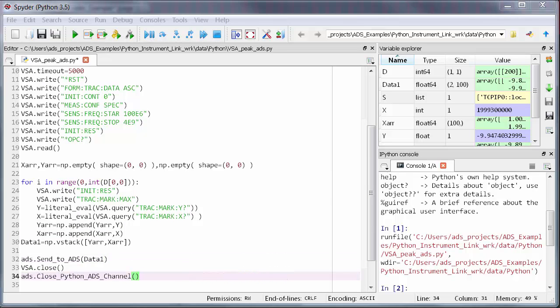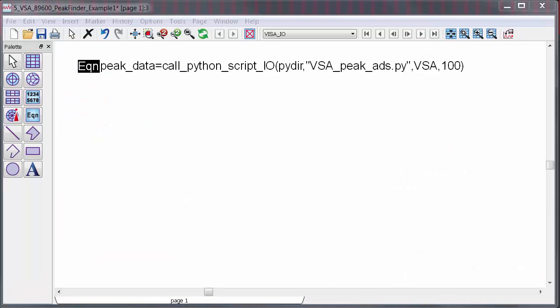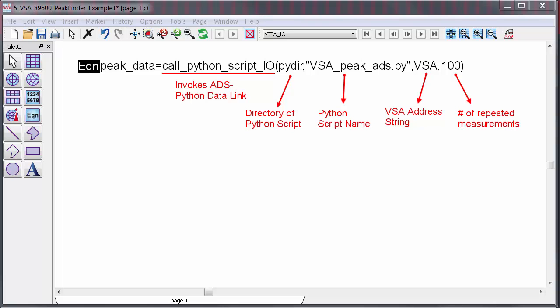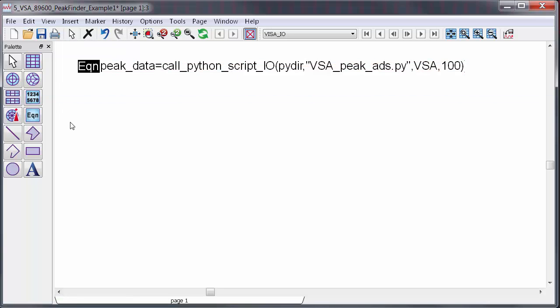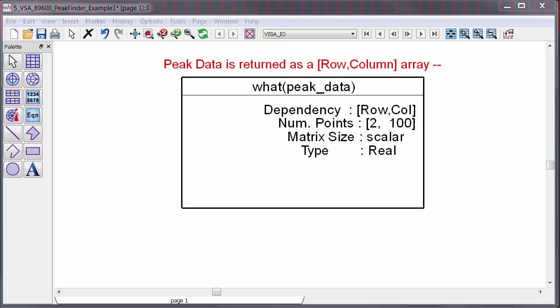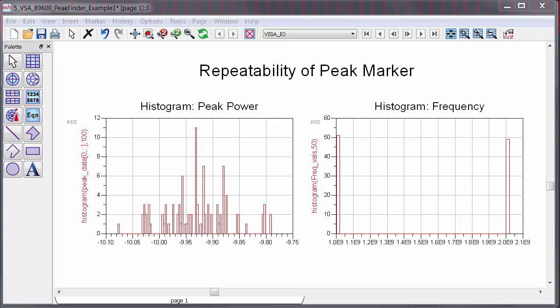Now this program will still run just fine from spider in Python, but now I can also run it from ADS. To do that, just use the ADS function, call Python script IO. Then I'll specify the directory, the script name, and then I'll pass in the data. In this case, the VSA string and the number of measurements to make. I'll bring up the VSA so that you can see this happen in real time, and then I'll invoke the script from ADS. So you can see the measurement ran, and the results came back to ADS in a single variable, indexed as row column. And I can, for example, easily plot a histogram to see the power and frequency variation over the 100 measurements, and I can do whatever I want in the ADS data display with this information.